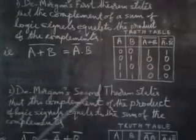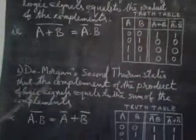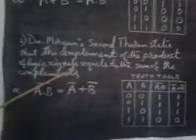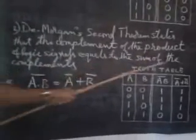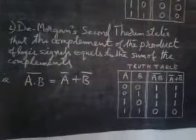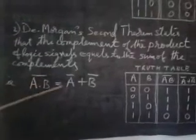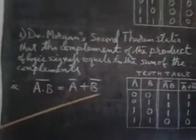Similarly, De Morgan's second theorem states that the complement of the product of logic signals equals the sum of the complements, that is, A dot B bar equals A bar plus B bar.